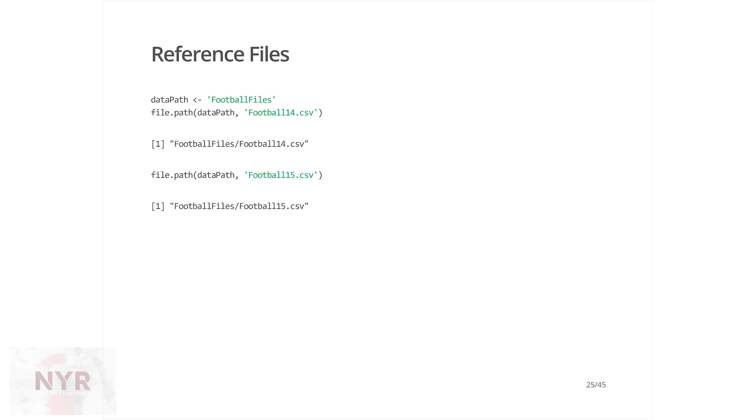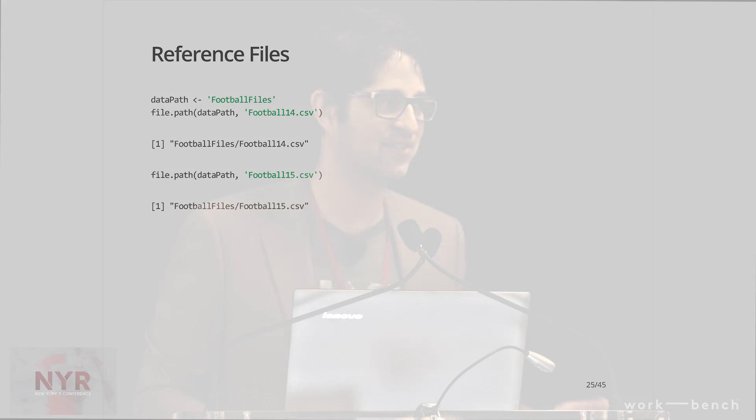Now we need to deal with relative paths. When you're writing a markdown file, it can be a pain because your working directory changes between interactive use and when you run the file. To handle this, use file.path. It takes a directory — maybe saved as a variable or set by an if statement — and references the full path of the file. Don't just use paste to concatenate paths: file.path is faster, and more importantly, it handles forward slash versus backslash automatically, so it works on Windows, Mac, and Linux.